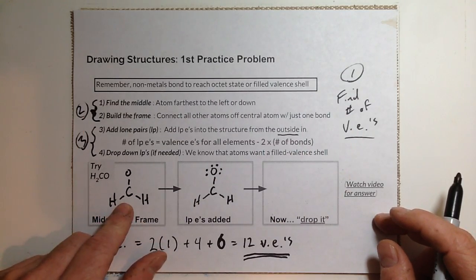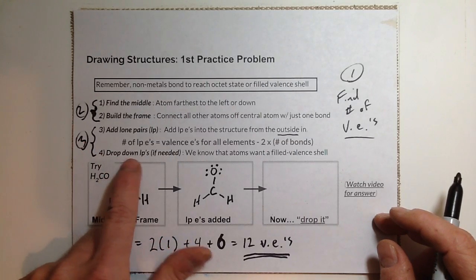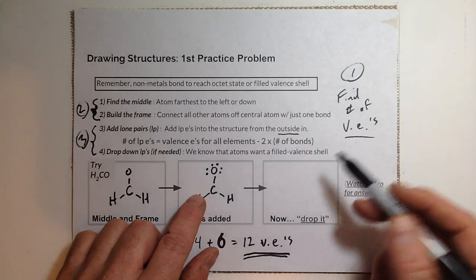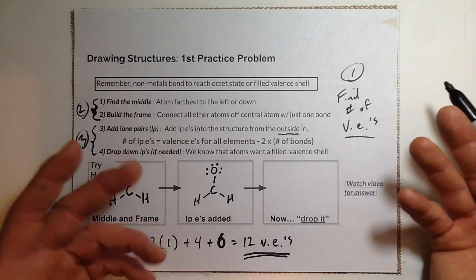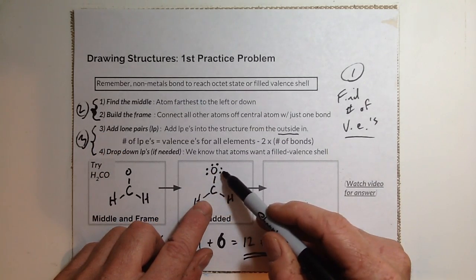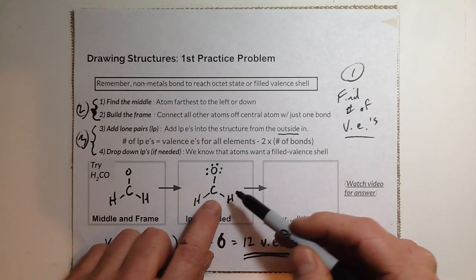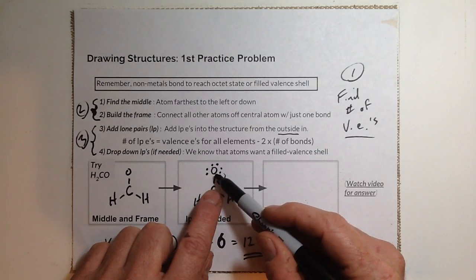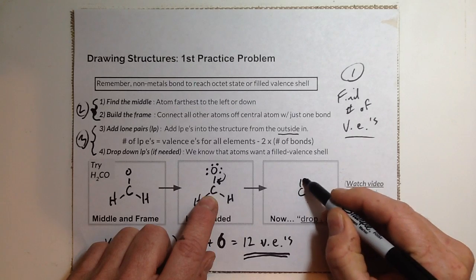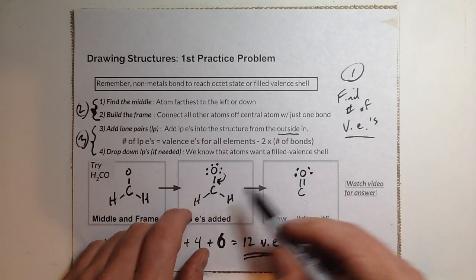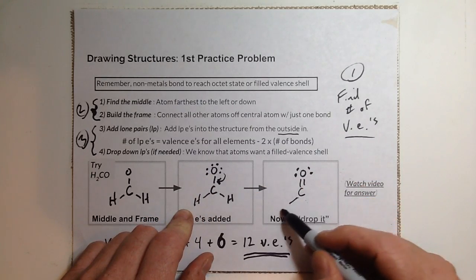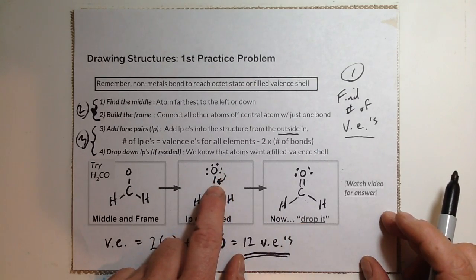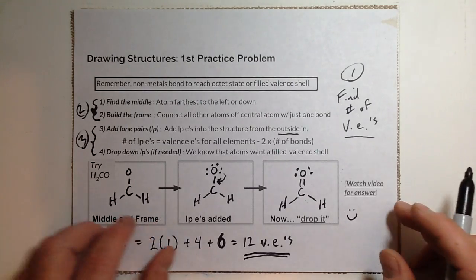We're almost done with step three, but notice it says 'drop down lone pairs if needed.' All atoms in the second period want a filled valence shell — eight electrons. Oxygen has two, four, six, eight around it, but carbon only has six electrons through bonding. So I drop down two electrons from oxygen — they're still part of oxygen's count but now part of carbon's count too. After repositioning, we have the final structure for formaldehyde, with a double bond between carbon and oxygen.